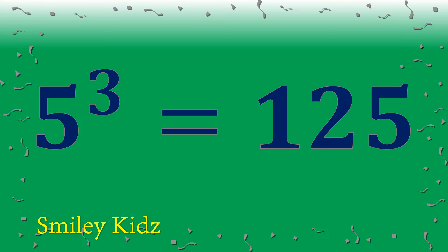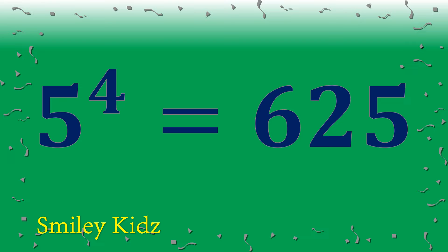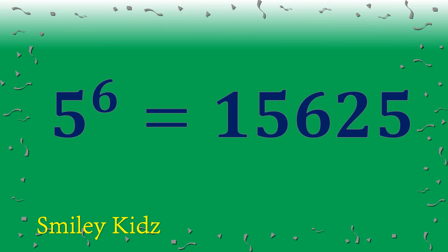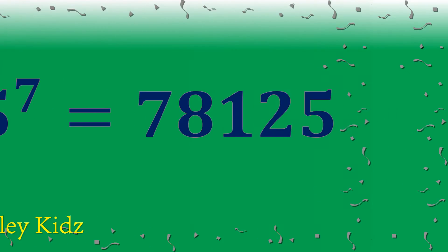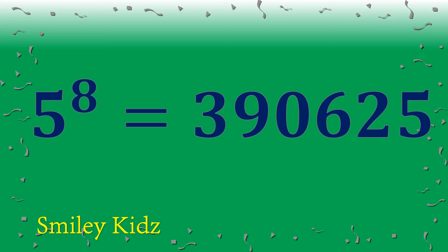5 power 4 is 625. 5 power 5 is 3,125. 5 power 6 is 15,625. 5 power 7 is 78,125. 5 power 8 is 3,90,625.